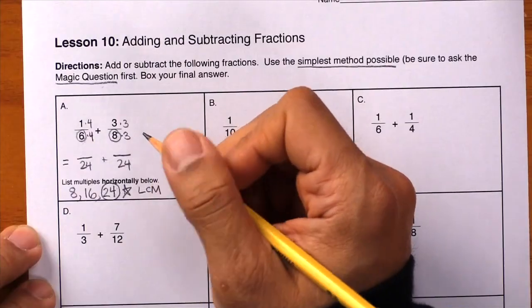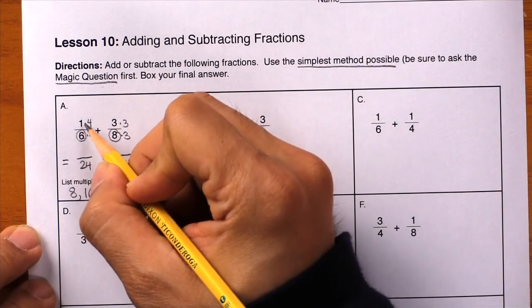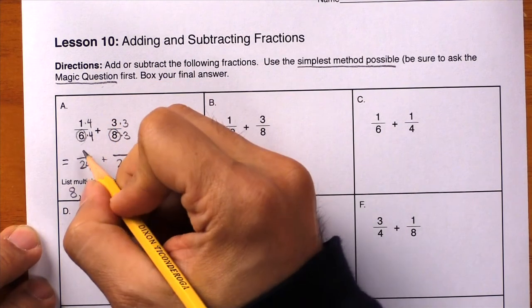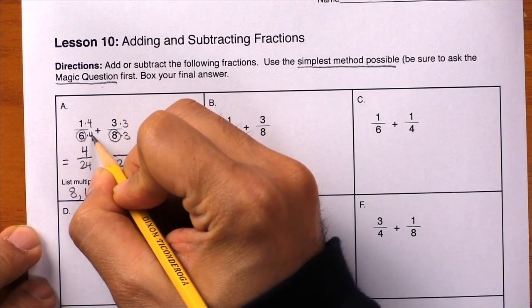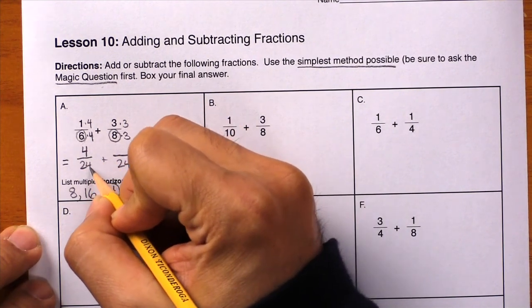Now everything becomes just a simple set of multiplication problems. Here we go. One times four is four. Write it down. Six times four is twenty-four. Write it down. And there it is right there. We know we're doing it correctly.